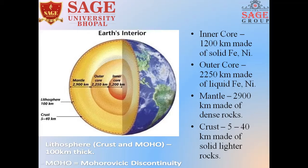The inner core is made up of solid iron and nickel, and is about 200 kilometers. The mantle is made up of dense rock, and it is about 2,900 kilometers. Then, the lithosphere, which is about 100 kilometers. The outermost layer is the crust, which is about 40 kilometers and made up of solid, lighter rock.